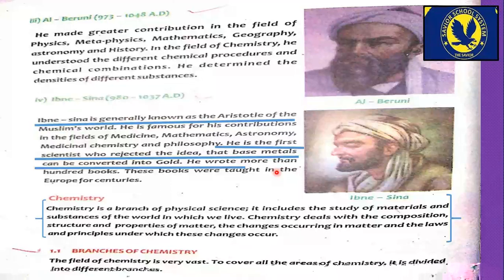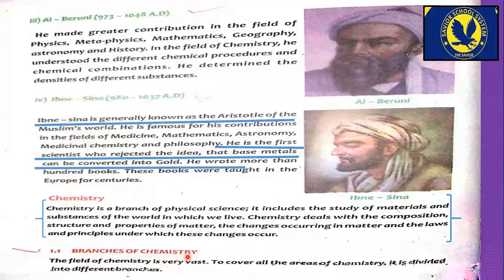Ibn Sina wrote more than 100 books, and these books were taught in Europe for several centuries. So these were the four famous Muslim chemists: Ibn Sina, Al-Biruni, Al-Razi, and first among them Jabir bin Hayyan. Next we will study the definition of chemistry and then the branches of chemistry — but that will be in our next video.